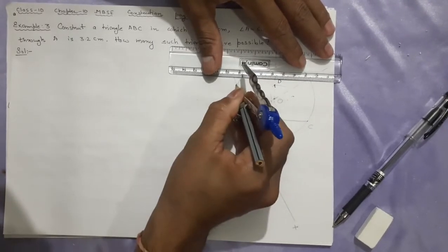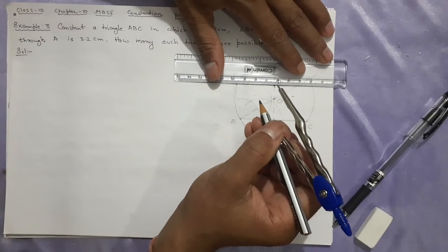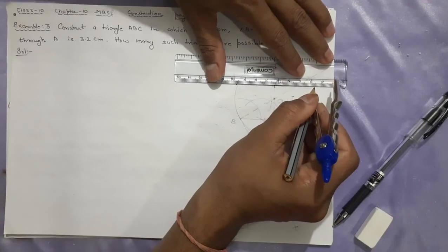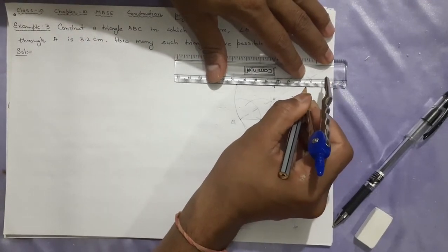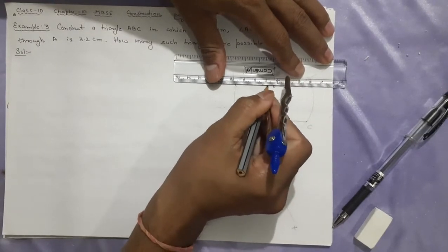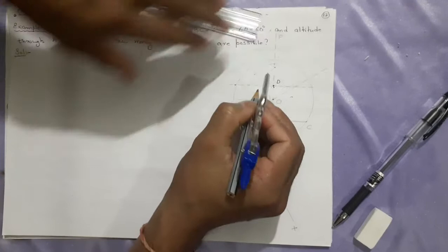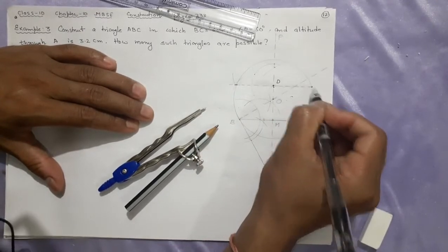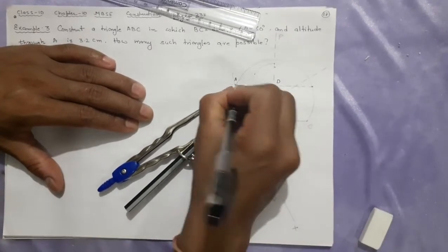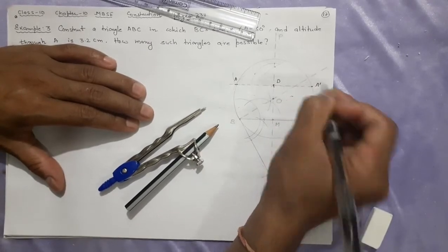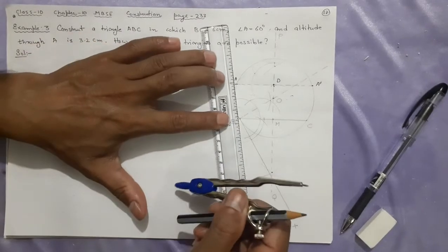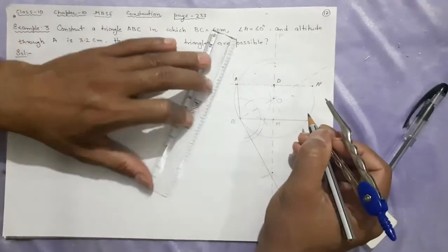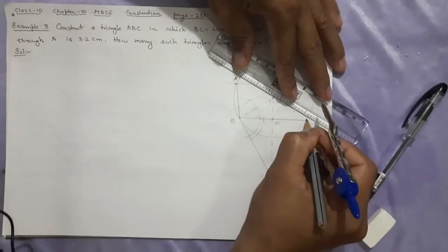These two points need to be joined. While they are joining, wherever they cut the circle, those points are the required lines. So we are going to join them. See, this is the point where it cuts the circle. This we call it A. This point, this we call it A dash.